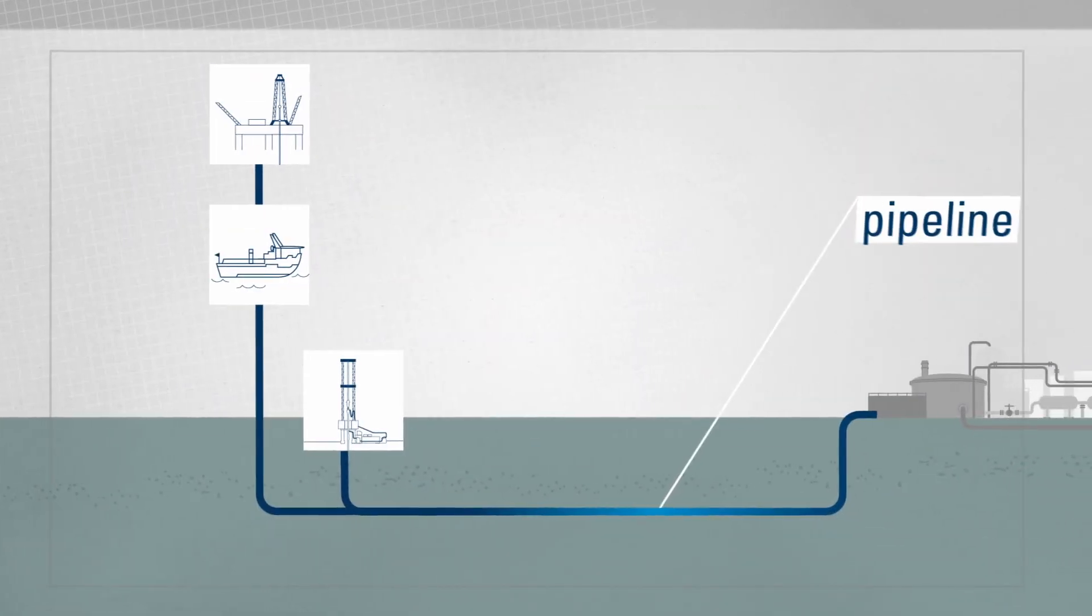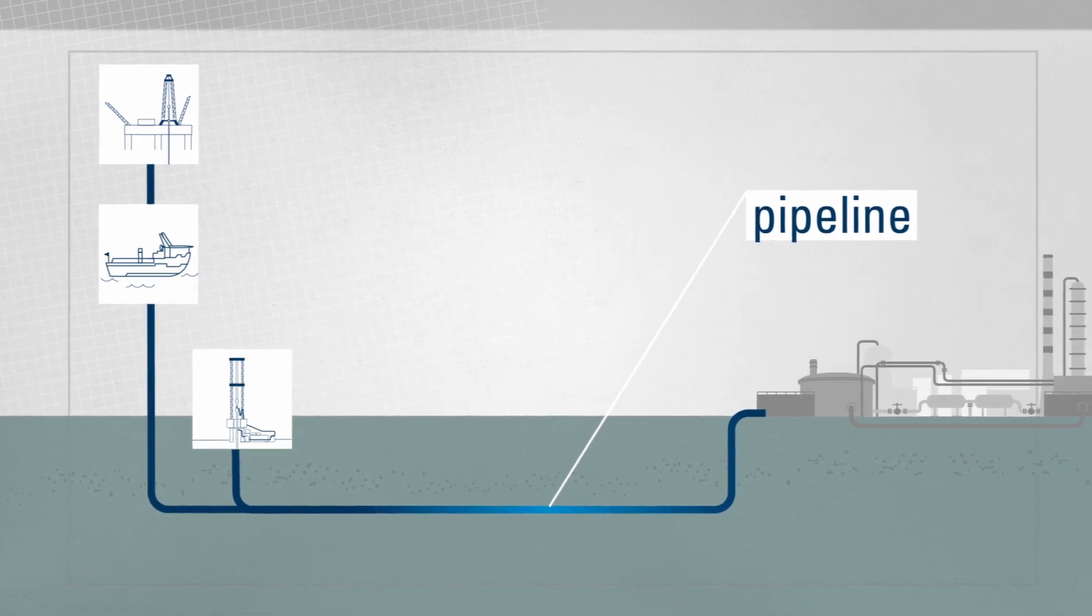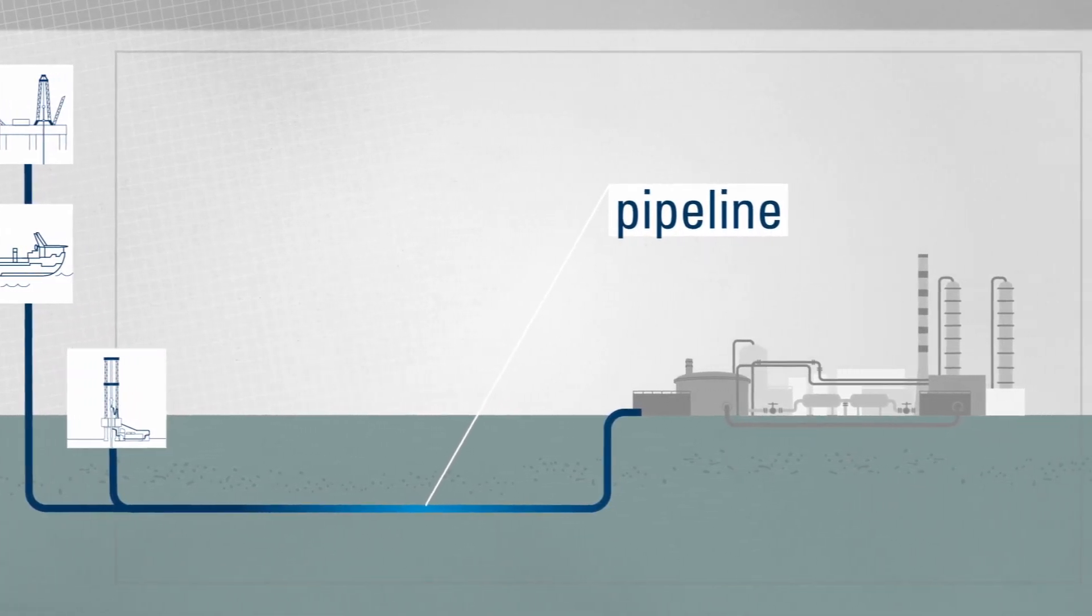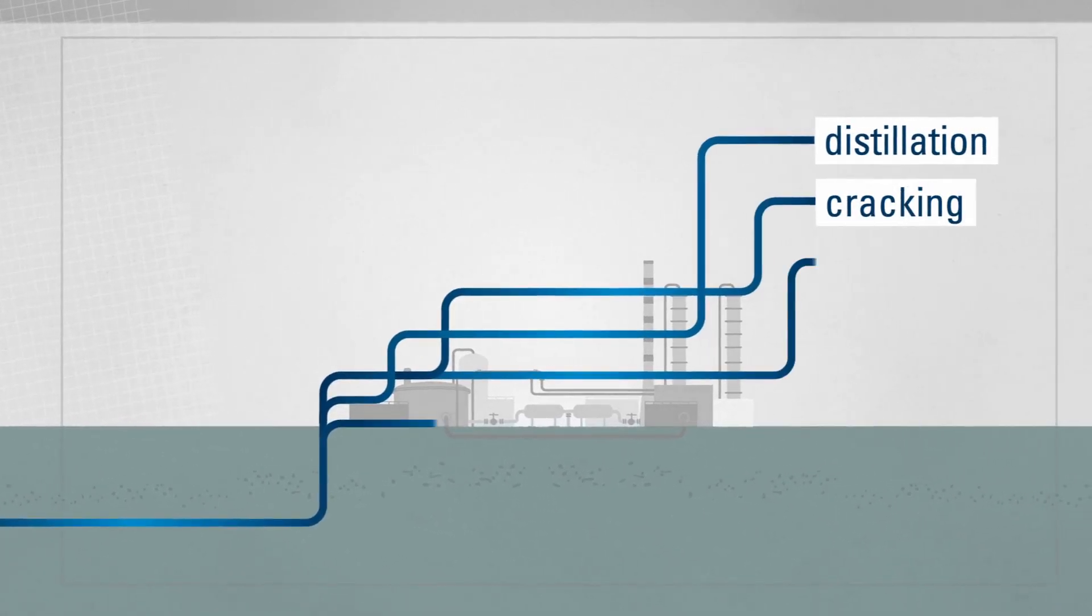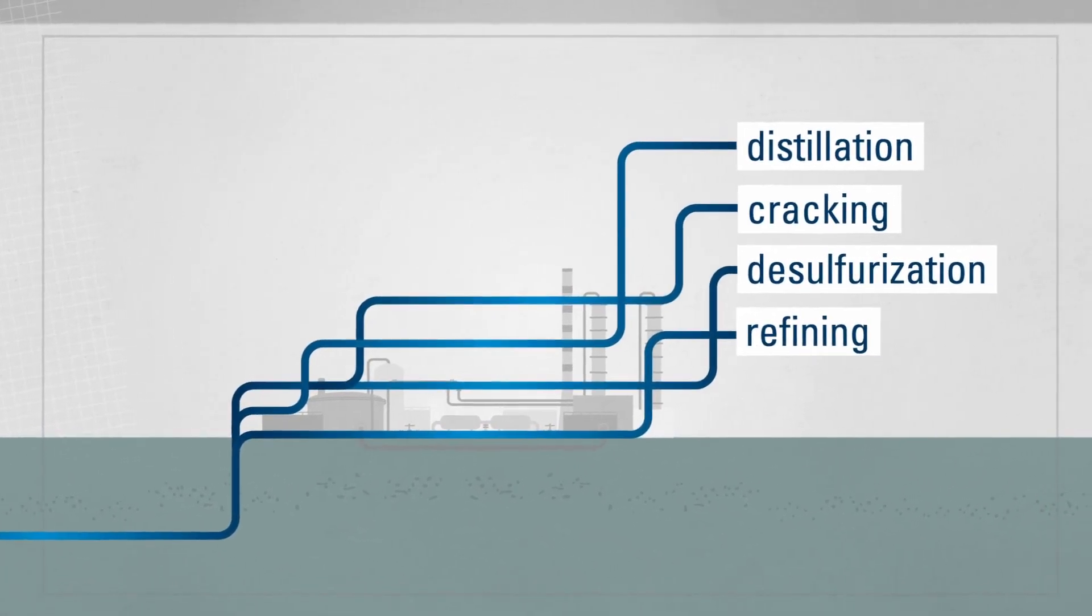The crude comes via a pipeline. To be able to use it in everyday applications, it has to be processed. There are different methods depending on the end product: distillation, cracking, desulphurization, and refining.